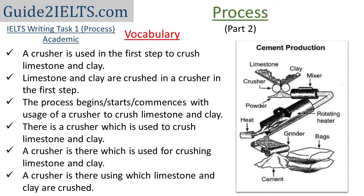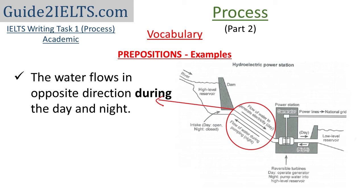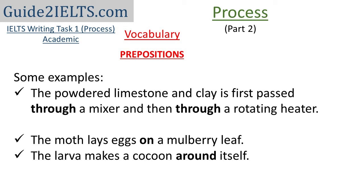It is vital that you use the correct preposition to describe the different steps. Some examples: 'The powdered limestone and clay is first passed through a mixer and then through a rotating heater.' 'The water flows in opposite direction during the day and night.' 'The moth lays eggs on a mulberry leaf.' 'The larva makes a cocoon around itself.' The correct usage of simple words such as 'through,' 'during,' 'on,' and 'around' is important to convey the right meaning.